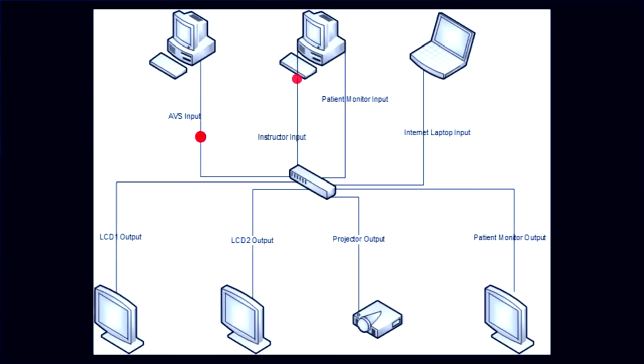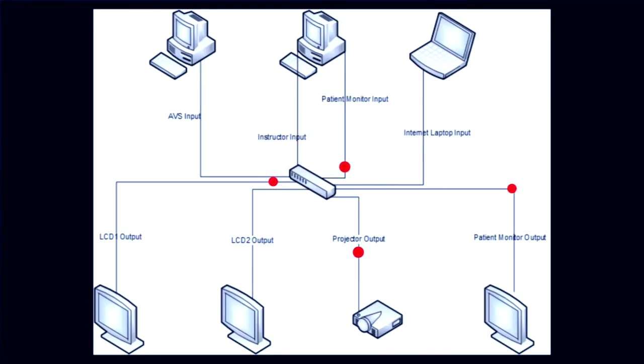Here is a graphical representation of how Wiser utilizes the switcher in a simulation room. The four inputs are shown at the top, the outputs at the bottom, with the switcher in the middle.